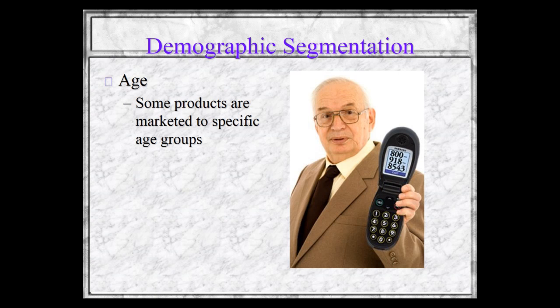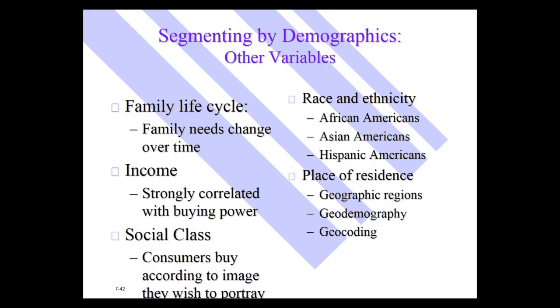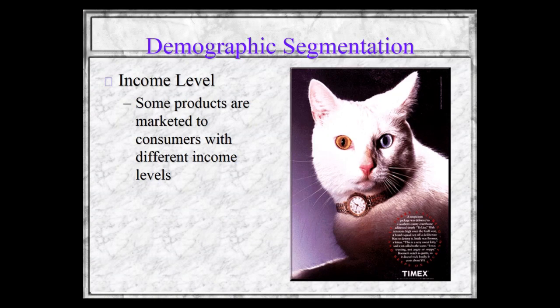Other variables often used include family life cycle, income, social class, race and ethnicity, and place of residence geography. Some products are marketed to consumers with different income levels. Here, the Rolex clearly targets a higher income level, compared to the Timex, which is much more of a mass market product targeting regular income levels.